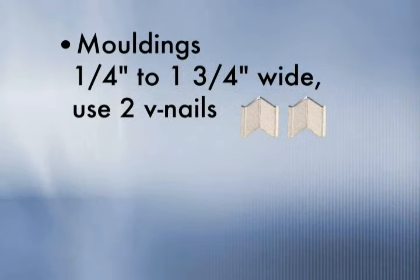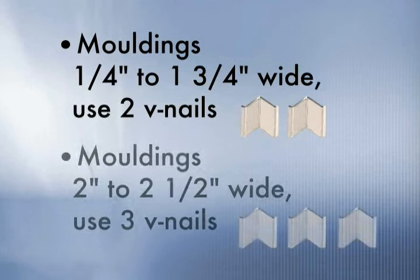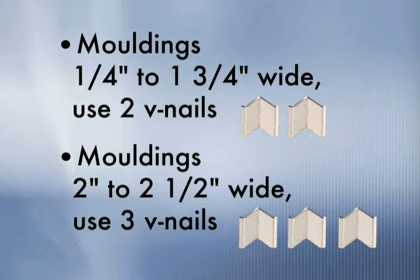For moldings one half to one and three quarter wide, use no more than two v-nails per corner. For moldings two inches to two and a half inches wide, use no more than three v-nails per corner.